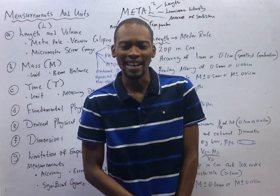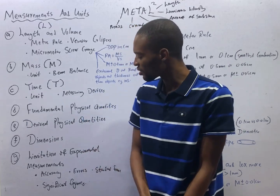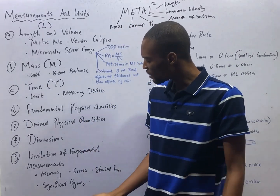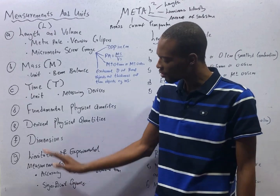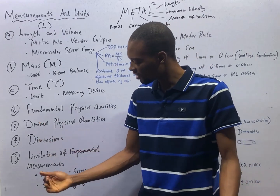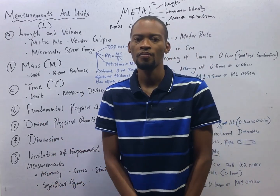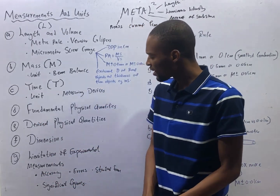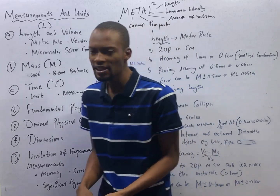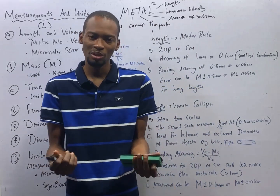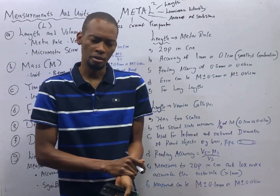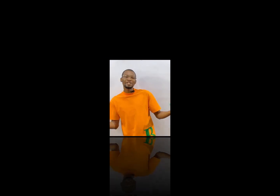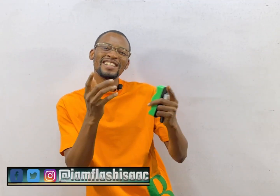How do you account for errors? How do you check errors in measurement, and how do you put measurements in standard form or significant figures? When you have errors, the error is simply the measured value minus the actual value.